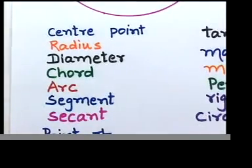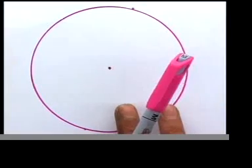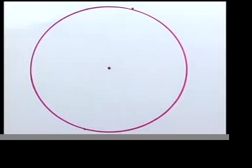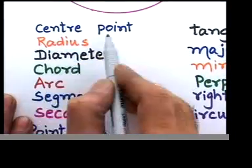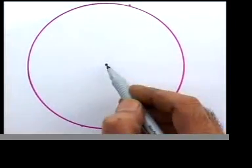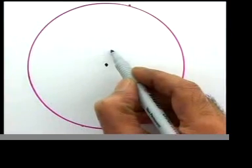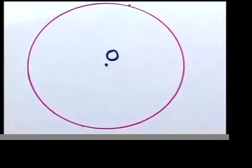You have the worksheets with you — this is the front page. All that you see on the screen is simply a circle with a center point, given as a dot. If you go and check your keywords, you will find a center point. In most of the sums that deal with circles, you actually see a center point which is given as 'O', the English letter O.